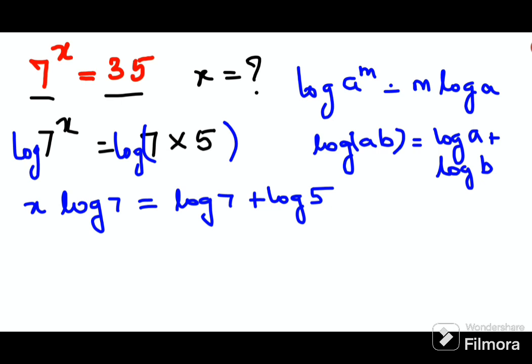So here, in order to find the value of x, what I'll do is divide both sides by log 7. So this is cancelling and I'll get x equals to...